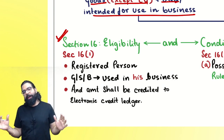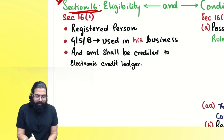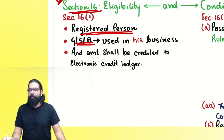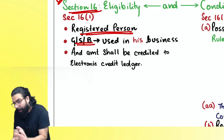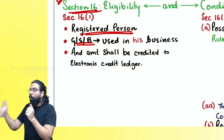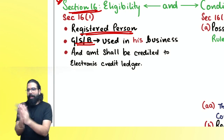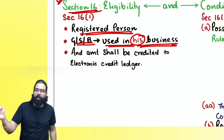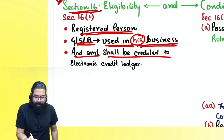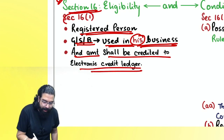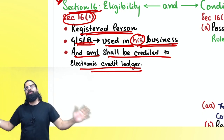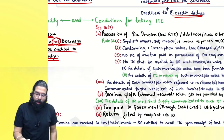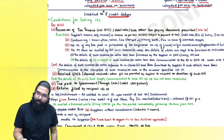Section 16(1) — eligibility and conditions for taking credit. A registered person is eligible to take the credit of goods, services, or both which he is using in his business. The amount shall be credited to his e-credit ledger. Section 16(1) tells us who will get the credit: a registered person, for those goods, services, or both, which he is using in his business.